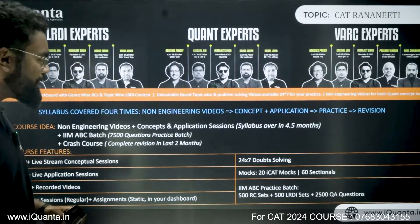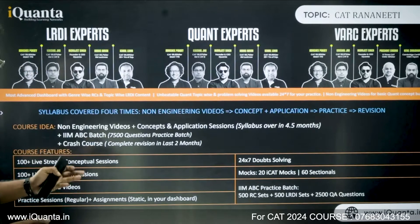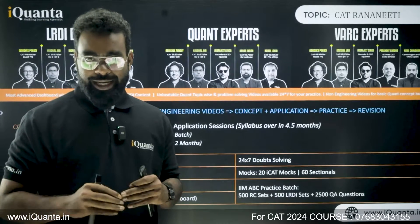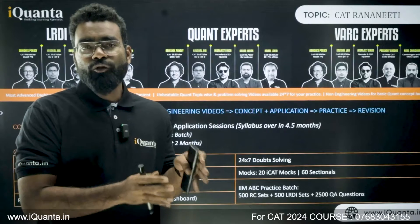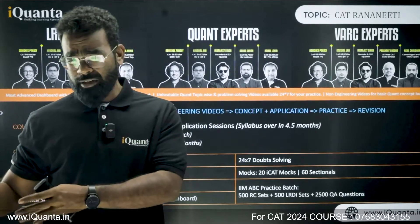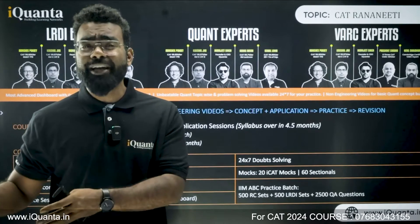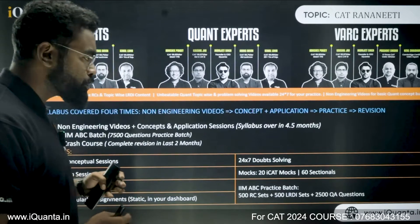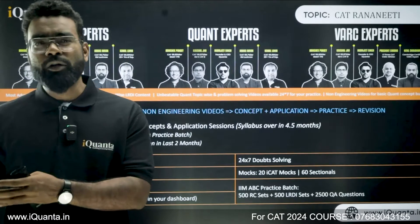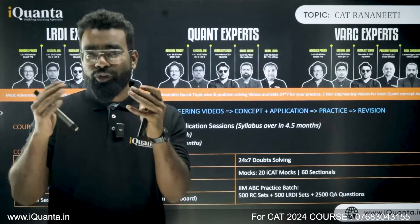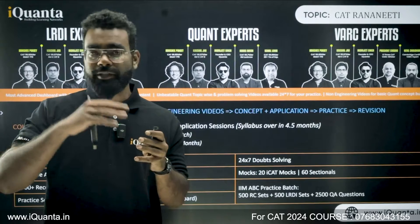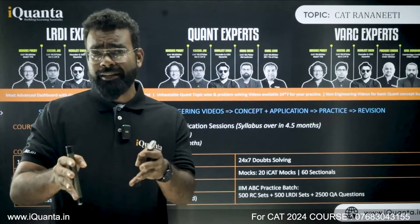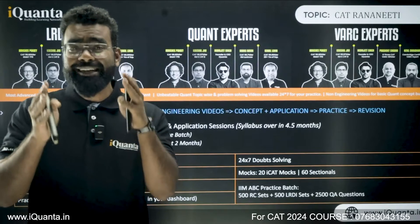Our course structure includes non-engineering videos, concept and application classes, the IIM ABC batch, and a crash course. In IIM ABC, we initially provide 3,500 questions; after around mid-July, you get the remaining 4,000 questions. The crash course starts around August–September, covers the entire syllabus — arithmetic, algebra, geometry, numbers, LRDI, and VARC — serving as a revision for the last two months.